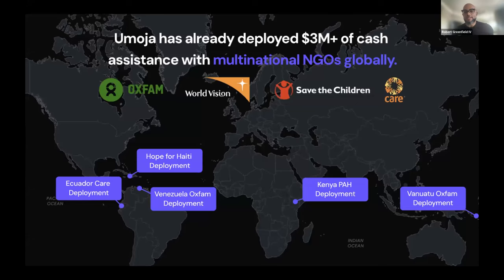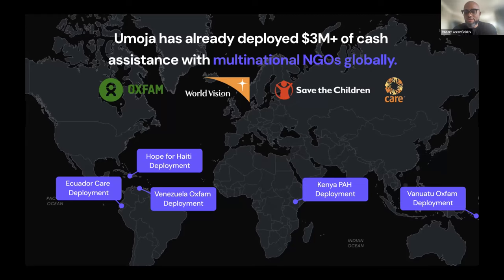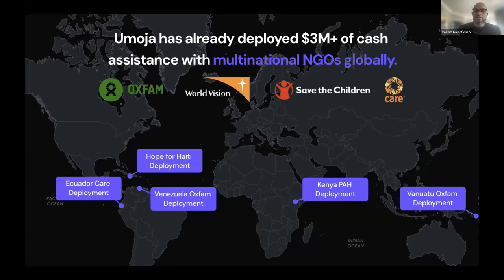In the context of cash assistance programs in particular, which has been our namesake and usually is one of the first use cases we're recognized for, we've deployed all over the world. Our focus generally has been how you can leverage adaptable and emerging technologies such as blockchain and deploy them in not only emerging markets, but hard-to-reach regions with vulnerable communities. This means dealing with a great deal of lack of technical literacy, lack of access to certain devices, and a variety of local payment methods that are oftentimes not compatible with even international wire transfers. How do you take that technology and embed it in a way in which people can use it simply and reliably?